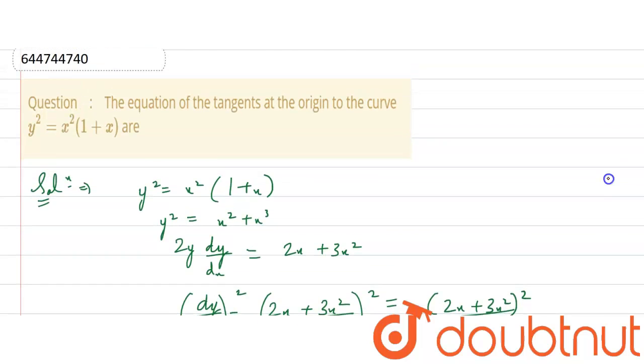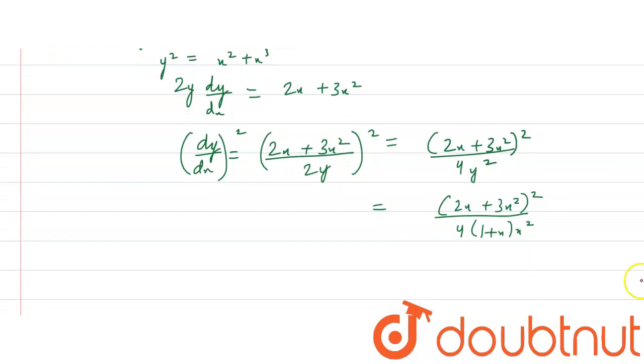We have given that the equation of tangents at the origin. As the origin name comes, then it passes through the point x equals to 0 and y equals to 0.